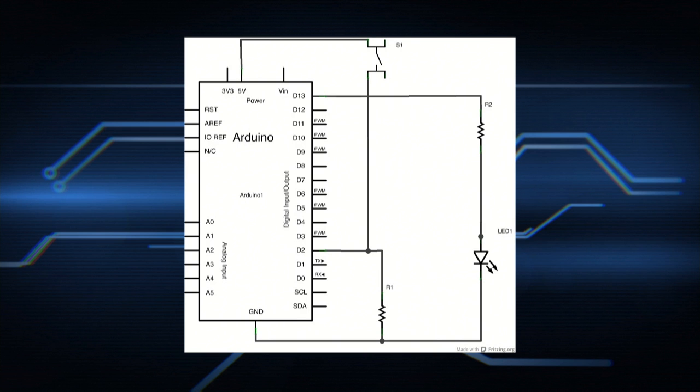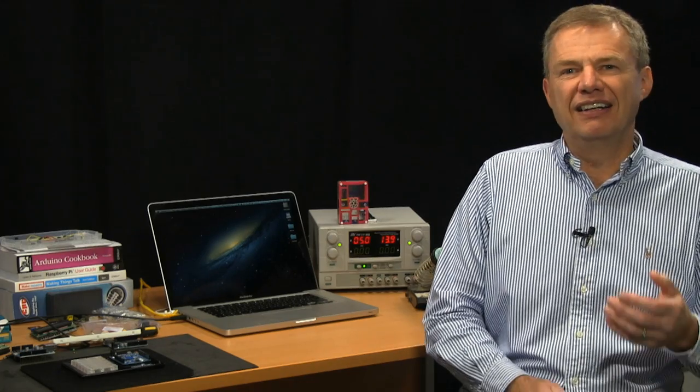The LED and the current limiting resistor on the right hand of the diagram, and you can see that the D13 is the output pin which comes through the current limiting resistor down to the LED and down to ground. So that's the circuit diagram.